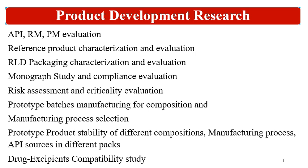Prototype batches are manufactured for composition and manufacturing process selection. Once all materials are received in R&D, the QTPP is prepared for prototype development, and prototype formulation batches are taken. Generally, batches with different particle sizes of API, different compositions, and different manufacturing processes are taken and loaded onto stability. Prototype product stability is studied across different compositions, manufacturing processes, API sources, and batches. Then drug-excipient compatibility studies are conducted to identify compatible excipients.